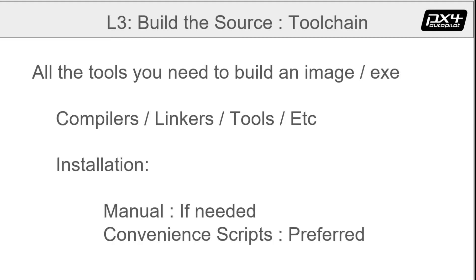Option one: use a toolchain to build. A toolchain is all the stuff you need to build for a particular target. There are toolchains for Windows, Mac, and Linux. In our demo, we will use Ubuntu to build for a simulation that will run on Ubuntu. To use a toolchain, you need to first install it. You have a choice: manual or convenience scripts. There are several convenient scripts and their use is recommended. See the appendix for details.